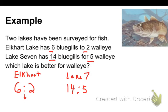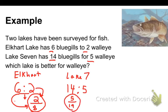Well, I want to know the walleye, so I'm going to put the two up top because that represents my walleye, but I'm going to take both of these and add them because they represent the whole. So two-eighths of the fish that we caught there are walleye. Lake 7, it's going to be five-nineteenths of the fish were walleye.